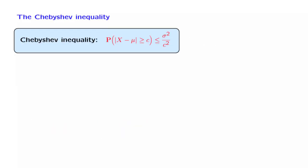As an application of the Chebyshev inequality, let us look at the probability of this event, that the distance from the mean is at least k standard deviations, where k is some positive number.